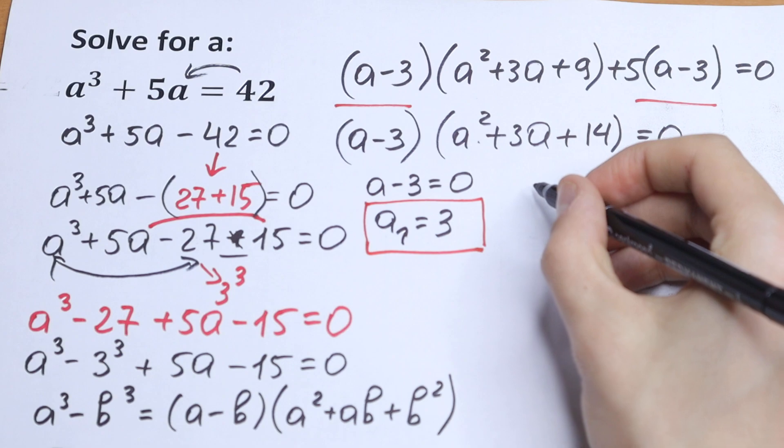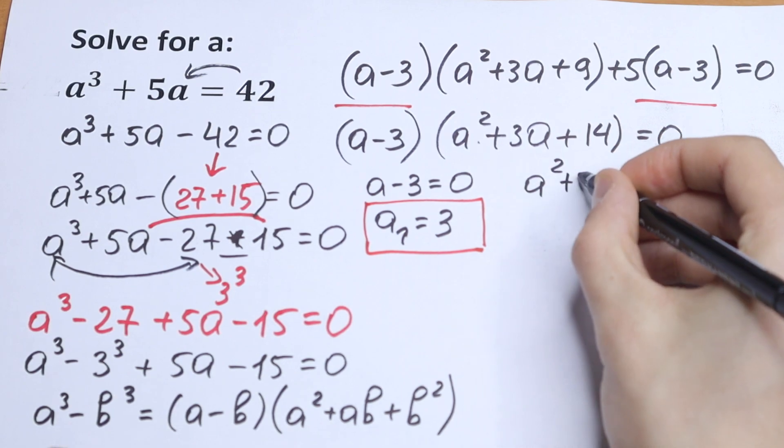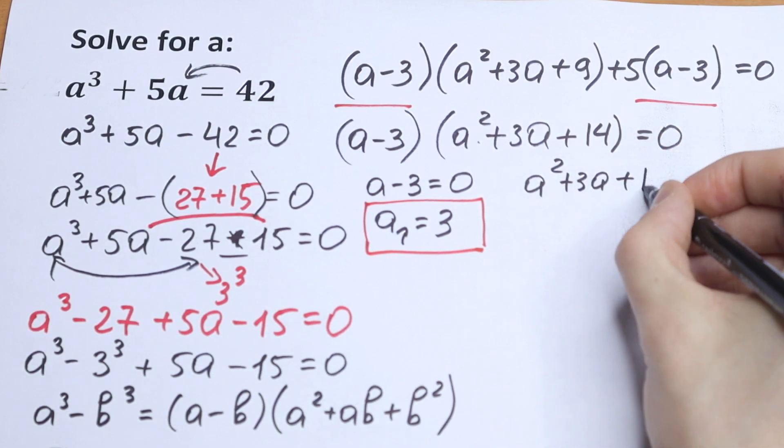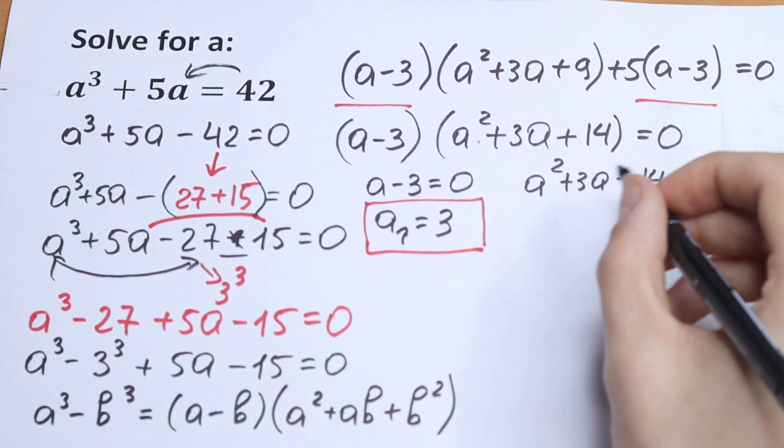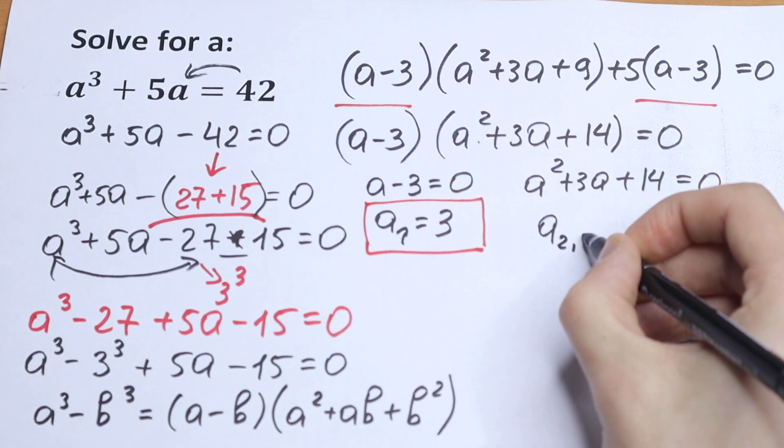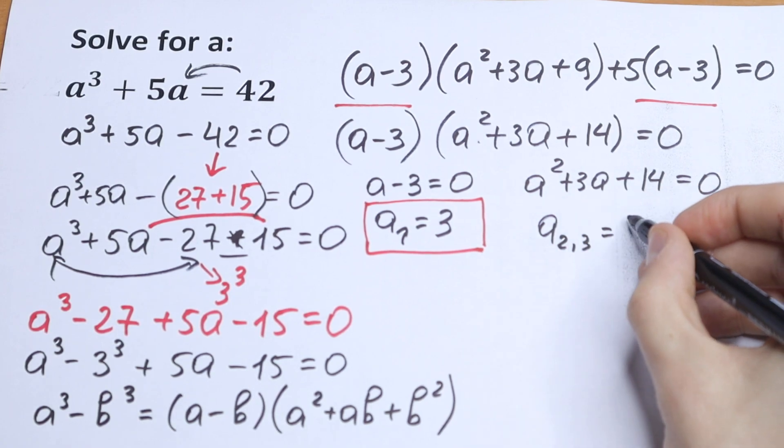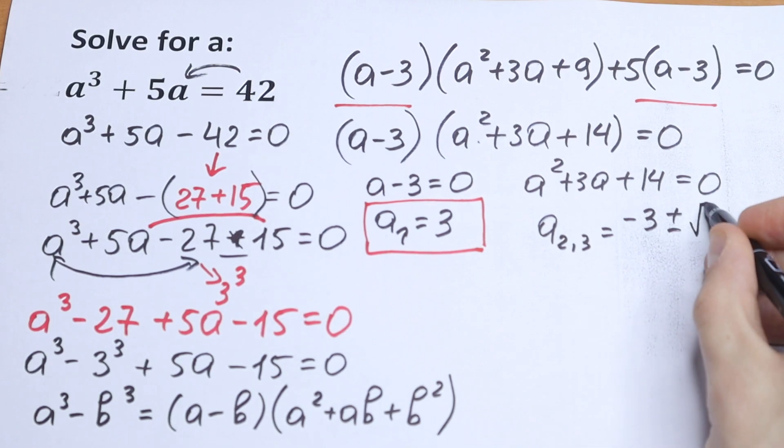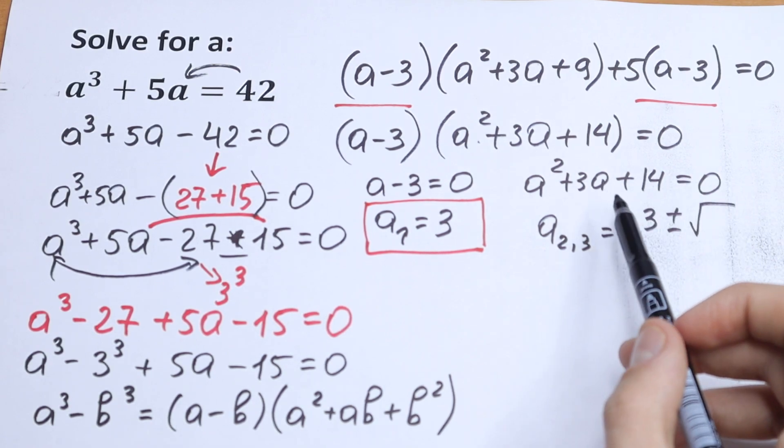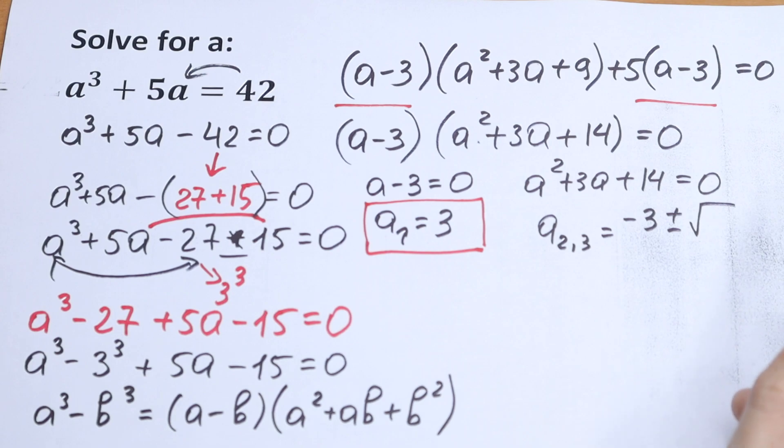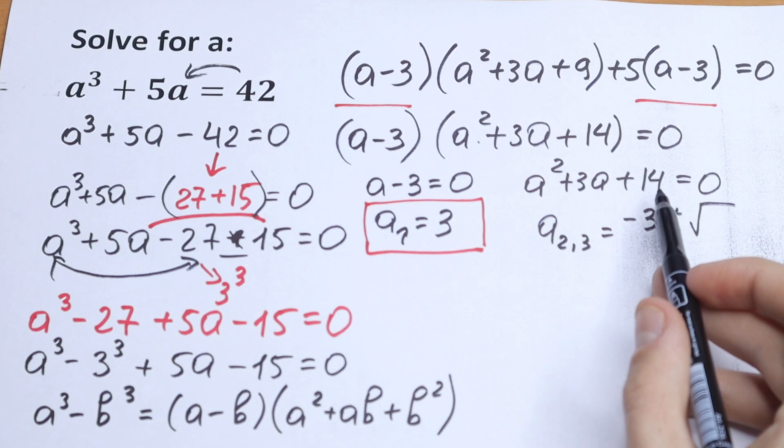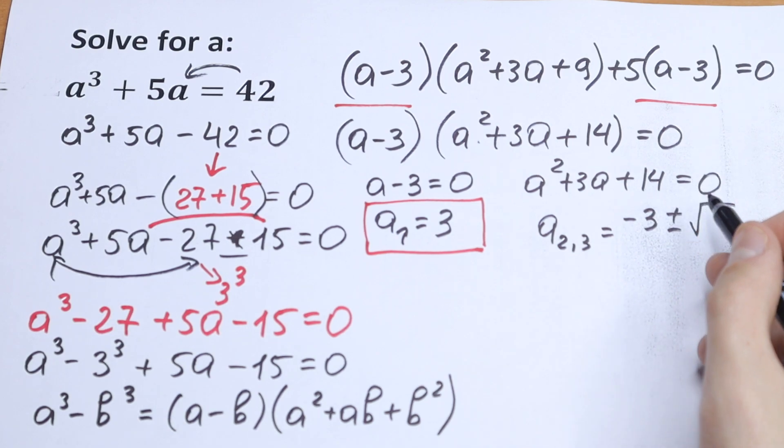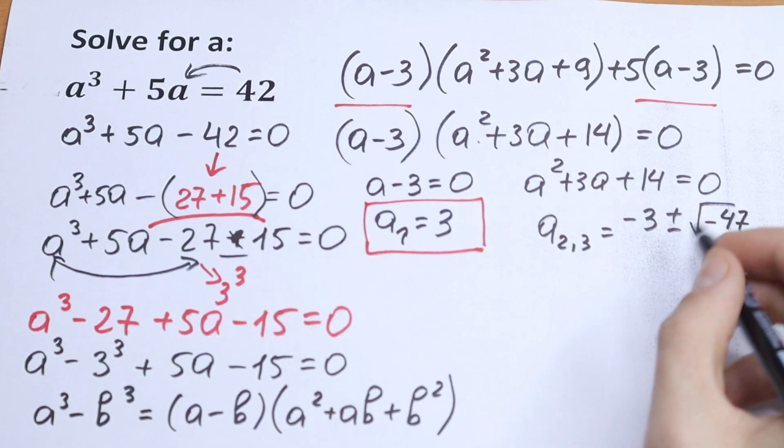Take a look right here. We have the second parentheses. a² plus 3a and plus 14 equal to 0. How can we solve this? Of course let's find our roots using a classic formula. a² and a³ equal to minus b minus 3 plus minus square root of... Let's calculate the square root. We will have 9 minus 14 times 4. We will have minus 47 as a result over 2.